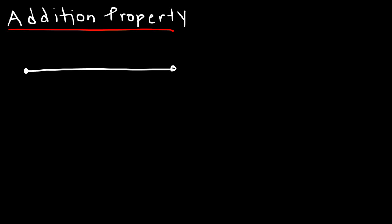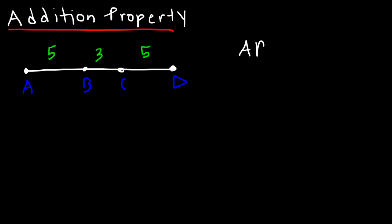So let's say we have segment AD and we're going to break it up into two other parts. So let's say this is A, B, C, and D. Let's say AB is 5, BC is 3, and CD is 5. If a segment is added to two congruent segments, in this case the two congruent segments are AB and CD — those are congruent to each other.